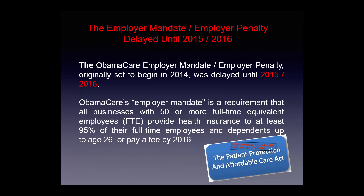Moving on to the employer mandate: the employer penalty was delayed until 2015–2016. Originally set to begin in 2014, the ACA employer mandate requires all businesses with 50 or more full-time equivalent employees (FTEs) to provide health insurance to at least 95% of their full-time employees and dependents up to age 26, or pay a fee by 2016.